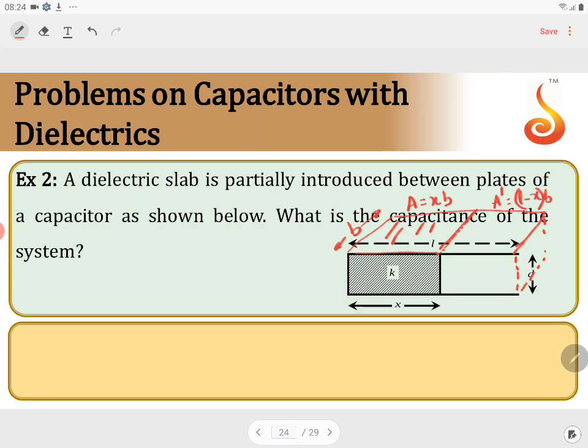Now, so this is the diagram. The area of the dielectric capacitor is XB. The area of the air capacitor is L minus X into B. The separation between the plates is D.